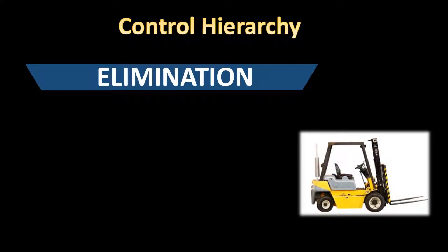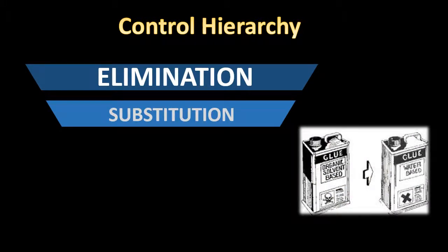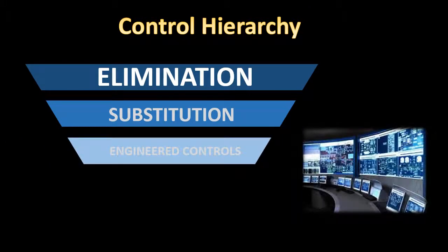If elimination is not possible, then you move down the hierarchy to substitution. The work you are undertaking may require the use of a hazardous substance; substitution would entail replacing the hazardous substance for a less hazardous one. Next in the hierarchy is engineered controls. These measures involve creating systems and structures which isolate people from the hazard — for example, remotely controlling a process inside a hazardous area.